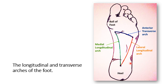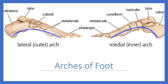The two longitudinal arches lie between the tarsal bones and the proximal end of the metatarsals. The medial arch is the higher of the two — this is what is lost in flat foot. The bones forming the medial arch from back to front are: calcaneus, talus, navicular, three cuneiforms, and the first three metatarsals.